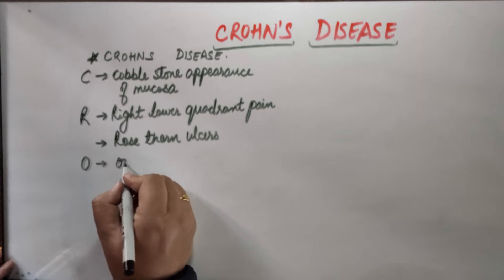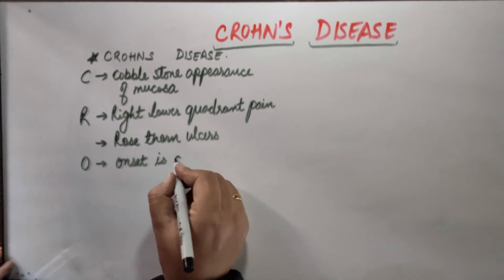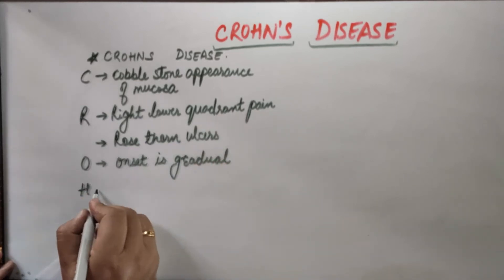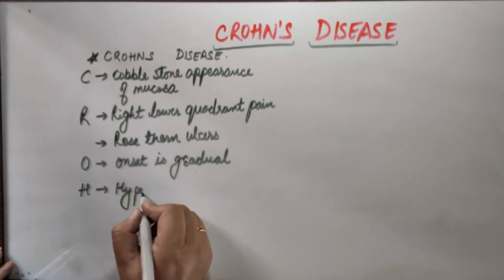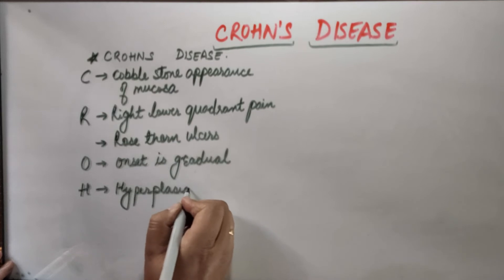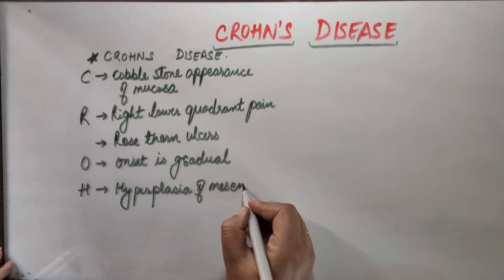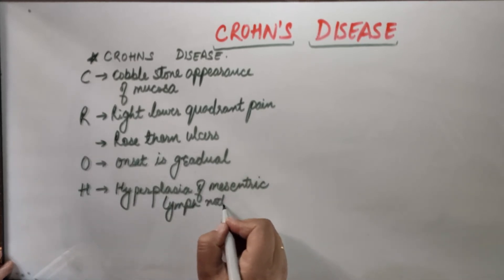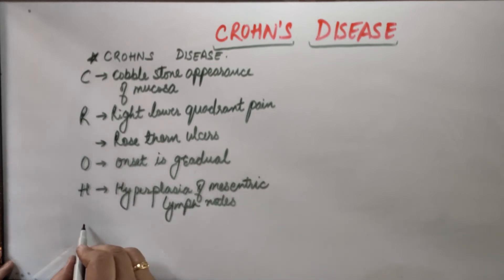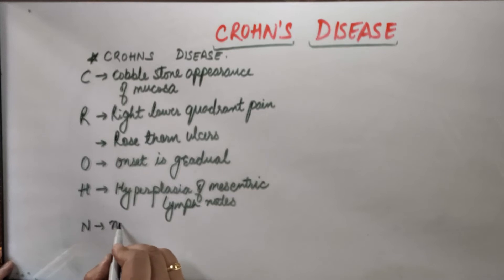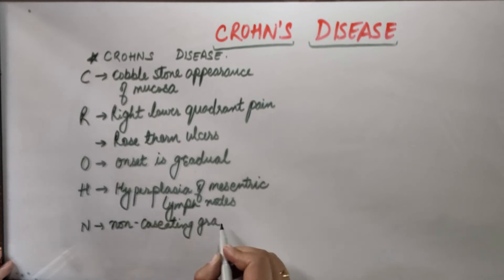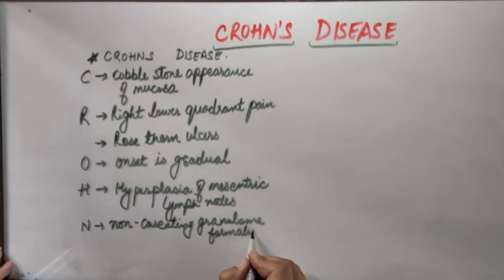O is onset is gradual, which means it is a chronic disease. H is hyperplasia of mesenteric lymph nodes. N is non-caseating granuloma formation — this is the microscopic observation.